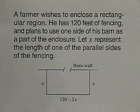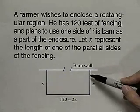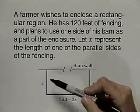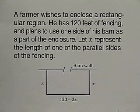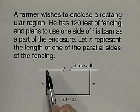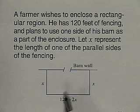Well, let's try another quadratic equation application. A farmer wishes to enclose a rectangular region. He has 120 feet of fencing and plans to use one side of his barn as part of the enclosure. Let x represent the length of one of the parallel sides of the fencing. So this is the fencing. x is one of the parallel sides. And since he has 120 feet of fencing, this is 120 feet of fencing. The length of this side can be represented by 120 minus 2x.